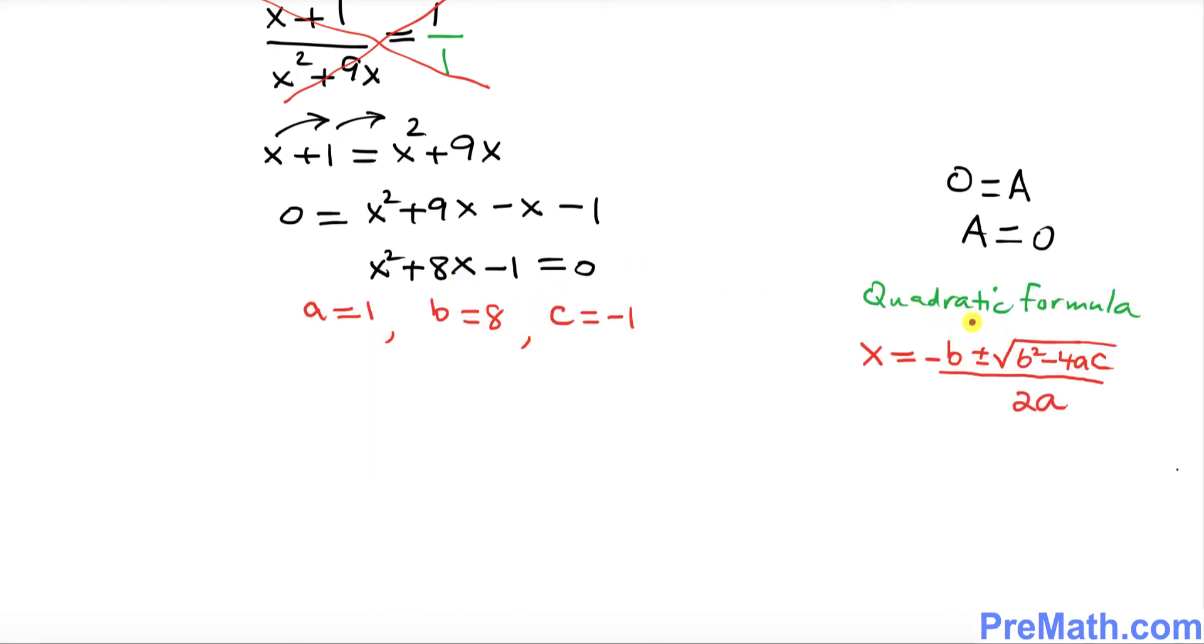So we got this quadratic equation and we're going to solve this for x. Here we're going to be using this quadratic formula. I'll just put it down over here on the right hand side. Over here, a turns out to be one, b equals to eight, c equals to negative one.